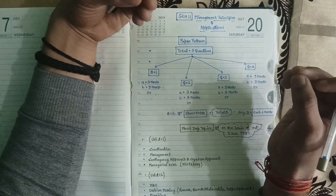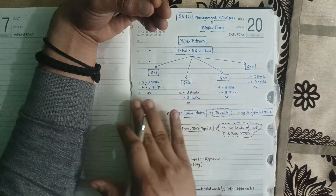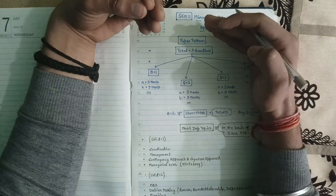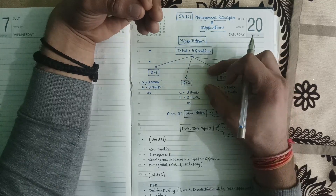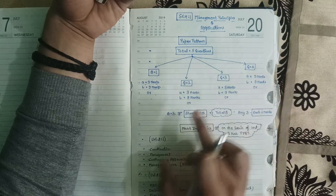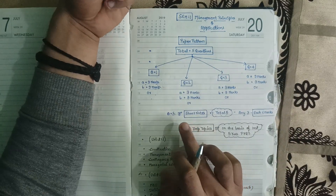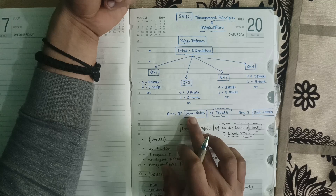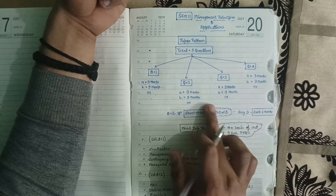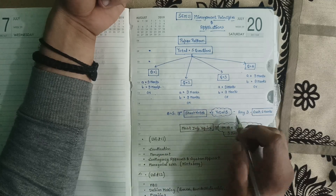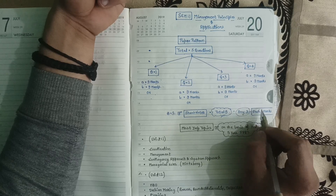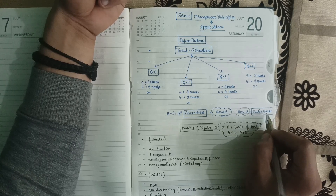All four questions have the same kind of pattern — each consists of two subdivided parts to check your knowledge from each unit and topic. You can choose either option A or B for each part. Now let's talk about the fifth question. According to the syllabus and marking scheme, question five is in the short note form — you get five short notes and have to do any three, with each short note carrying six marks, totalling 18 marks.